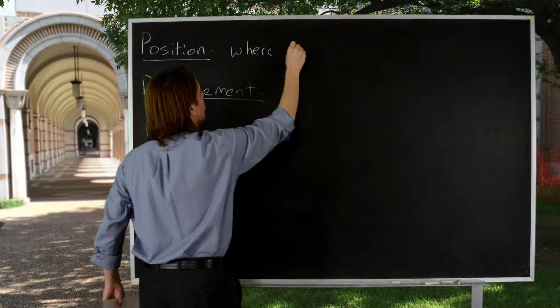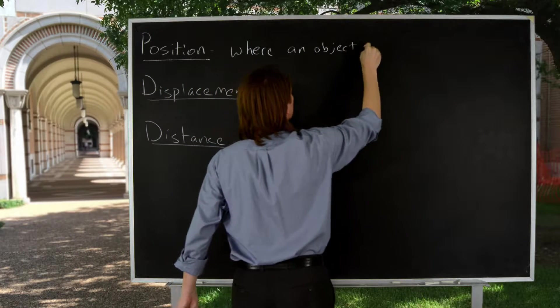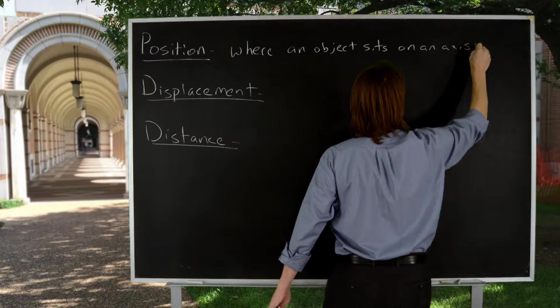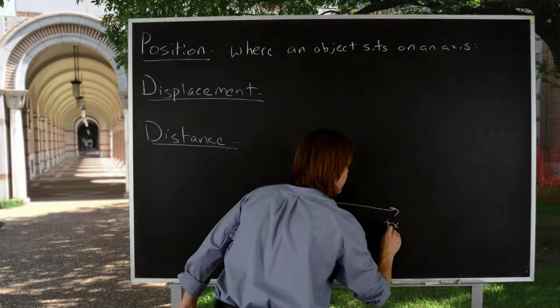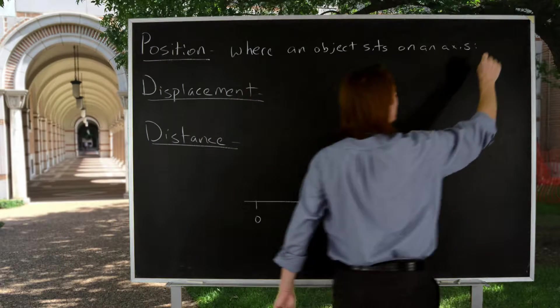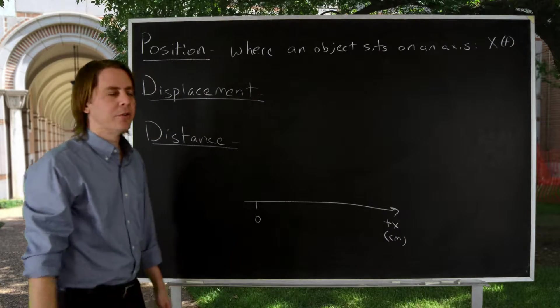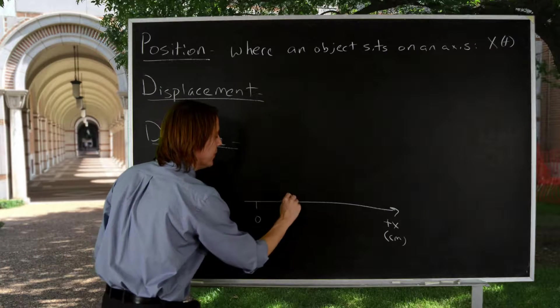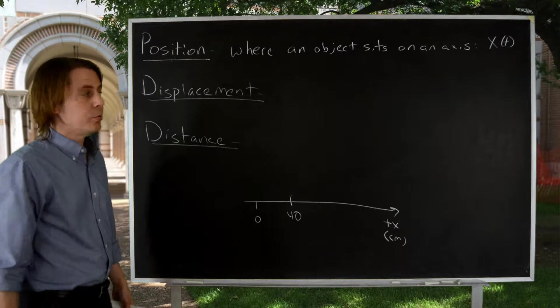Position is where an object sits on an axis. So if I were to draw an x-axis down here, that's the plus x direction in centimeters, there's the origin. Then you would just describe it mathematically by x, the variable x, as a function of time. So if the chalk sits at this position, say 40 centimeters, then x equals 40 centimeters.